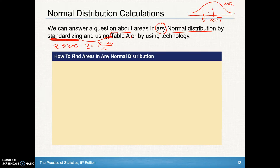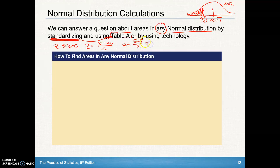Say we have a score of 5. What's the area to the left of that on the curve? We know the total area under the density curve is 1, and it's certainly less than 0.5 because that's halfway. That's where standardizing the data helps us, and then we can use Table A. We've got to find a z-score: our score is 5, our mean is 7, our standard deviation is 2. If we do the math, this comes out to be negative 1.